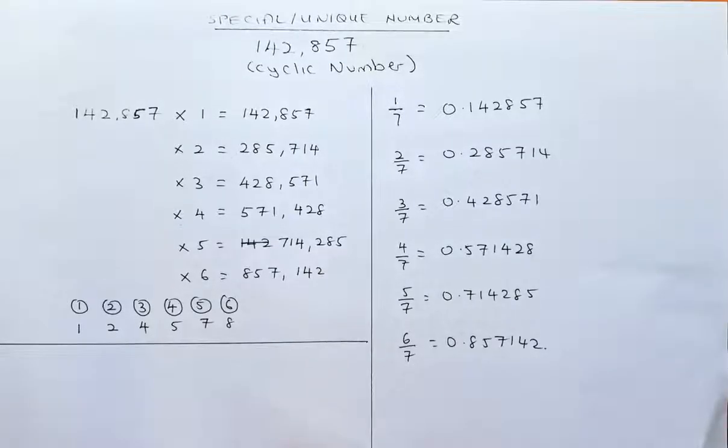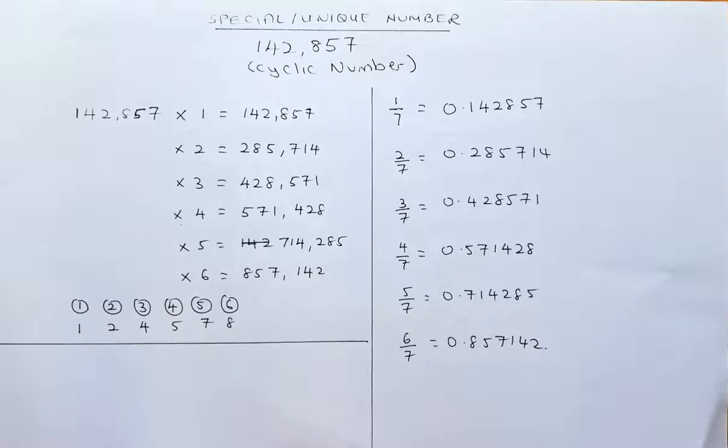If you notice, they are all the same numbers, just rotated around and around. That's why it's called a cyclic number. This is the most famous cyclic number.